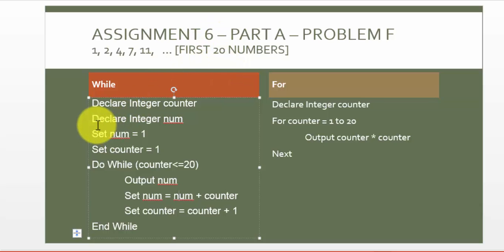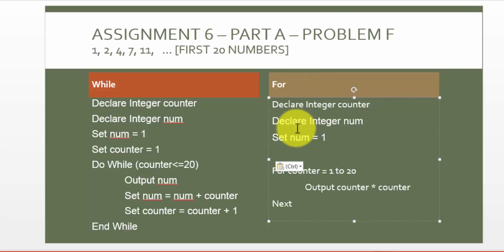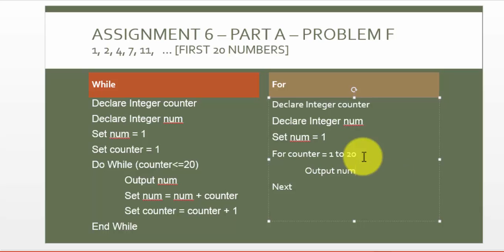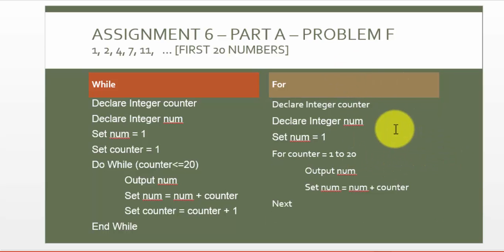If we apply the same logic in the for loop, I simply copy those two lines. I need the declaration for integer number assigned a starting value of 1. As we're outputting, we output number, and then upgrade the value of number by setting it to number plus the current value of counter. This is the for loop solution for the exact same problem. You can turn in either one of the two solutions, whichever you prefer. You don't have to turn in both versions.